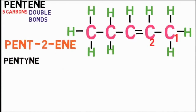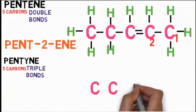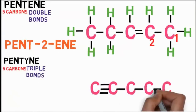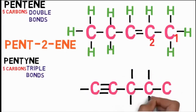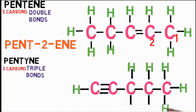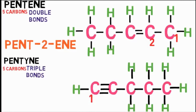Similarly, pentyne: prefix 'pent' means five carbons and 'yne' means carbon-carbon triple bond on any pair. Insert single bonds between remaining carbon pairs, add bonds to each carbon, then add hydrogen. You must specify the position of the triple bond — in this case it is 1 from the left, so it is pent-1-yne.